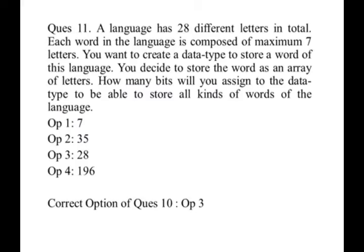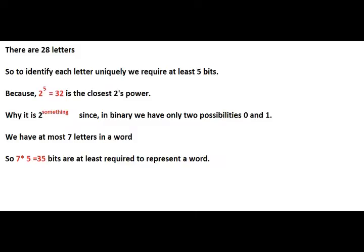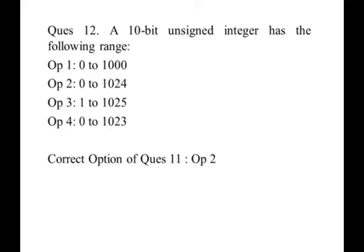Oh, it's a bit complicated one. Just try to solve it. As mentioned, there are 28 different letters, so in order to identify those 28 letters we require at least 5 bits. Why 5 bits? Because 2 to the power 5 is 32, which is the closest value to 28. Now for every letter I am using 5 bits, so every word has a maximum of 7 letters. That is, 7 into 5 equals to 35 bits are required to represent a word.